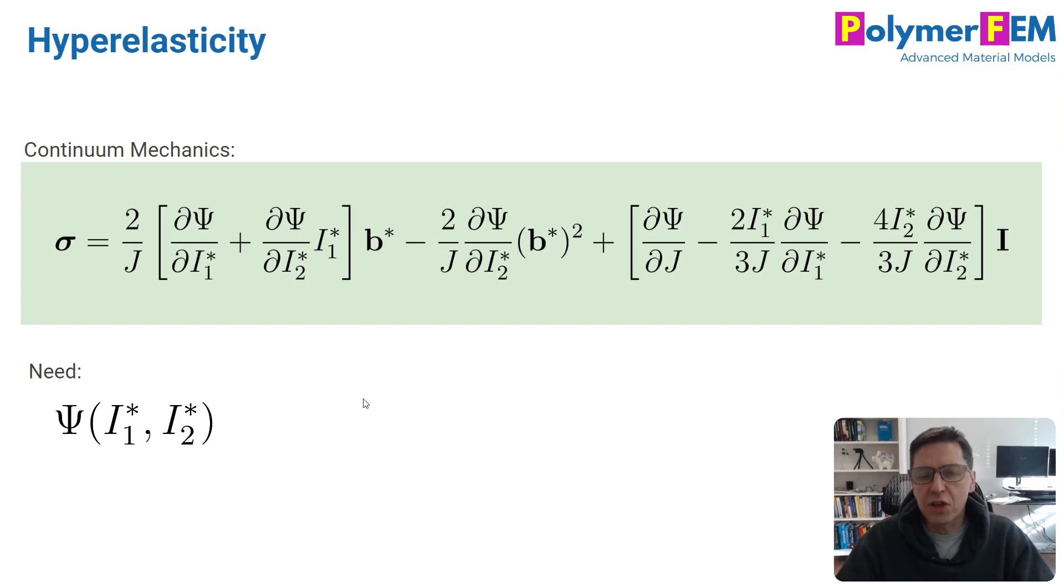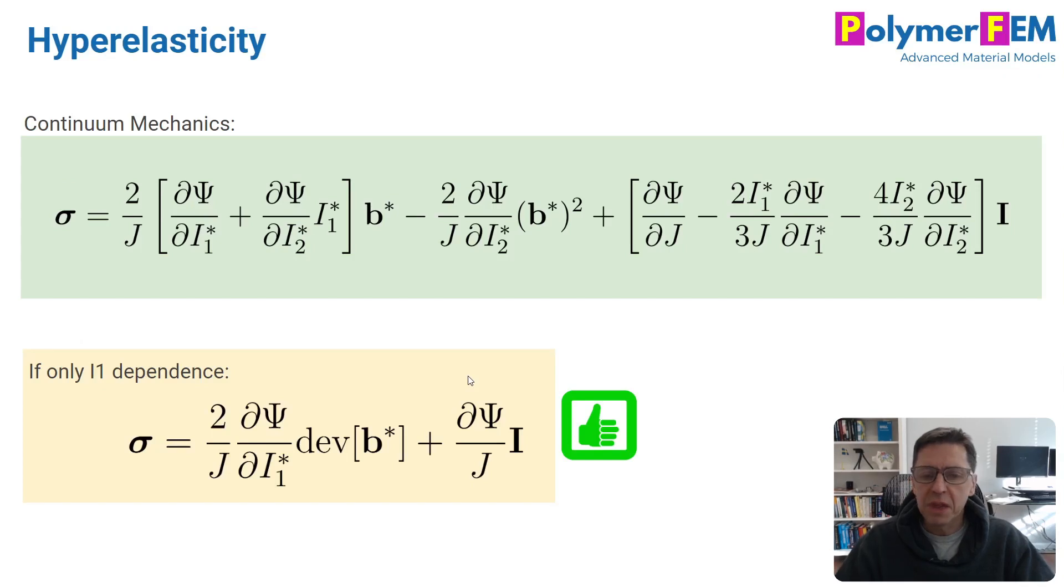This is an energy function, a scalar number depends on two variables, a little bit messy. The hyperelastic functions available in your finite element software have some mathematical expression for how this psi function depends on these two invariants. Life gets much easier if you consider cases where this energy function does not even depend on the second invariant i2. If you remove all i2 dependencies, you get a much simpler equation.